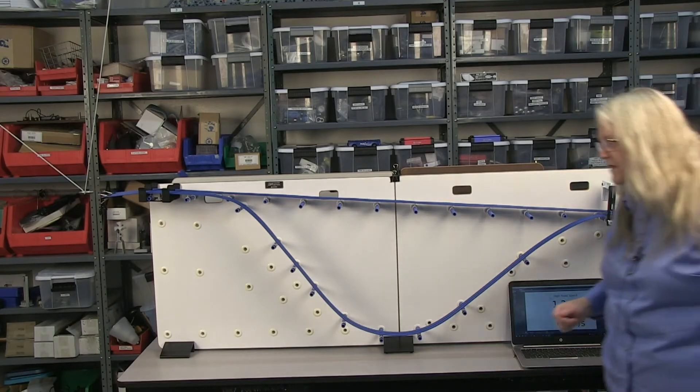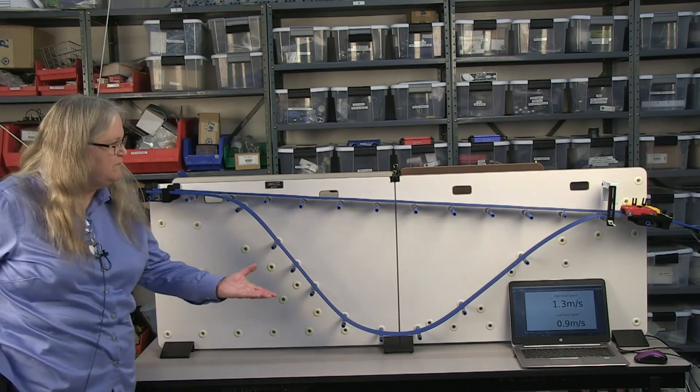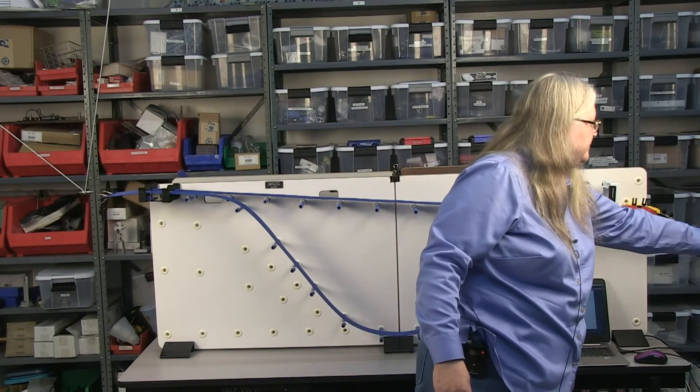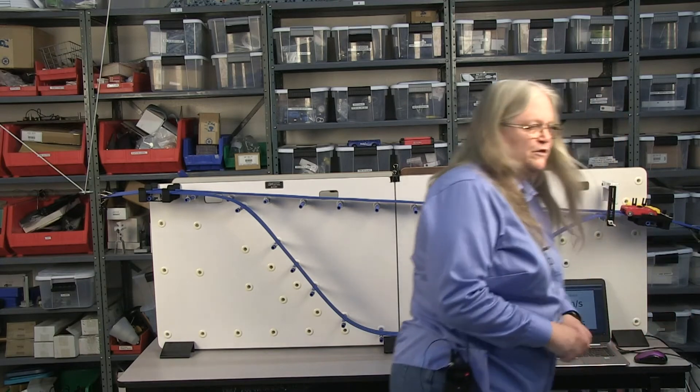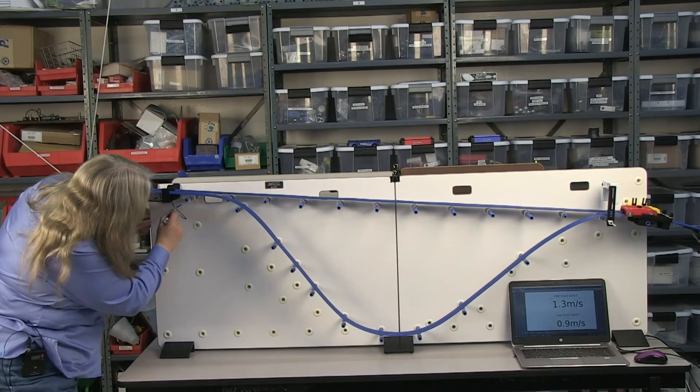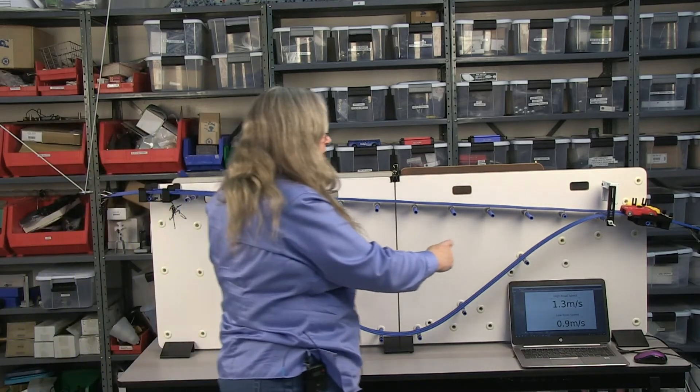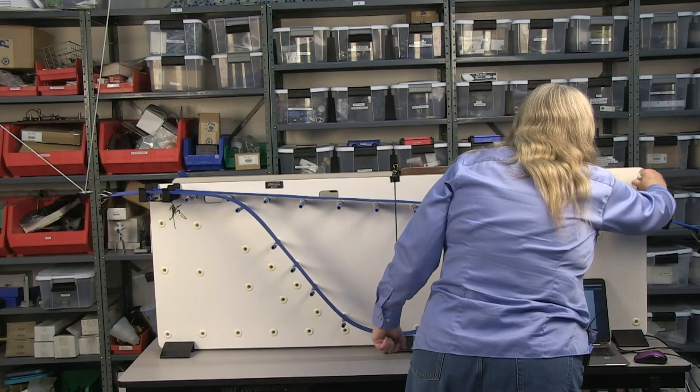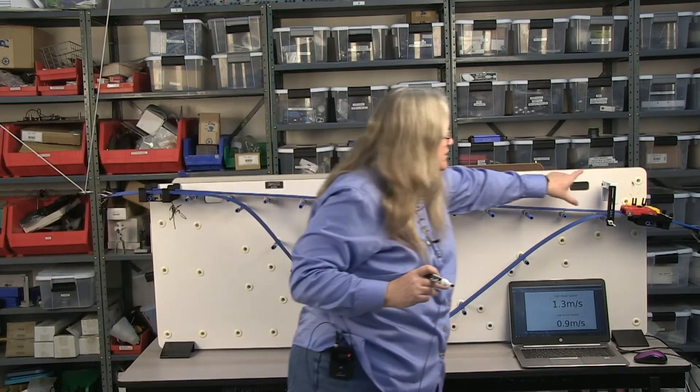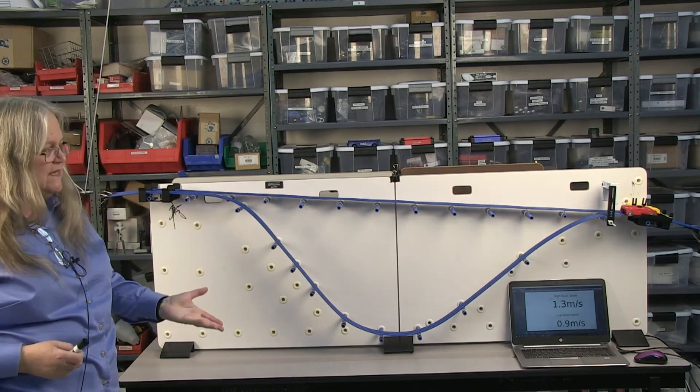Now really they should be the same because if you look at this from an energy point of view, we're starting both of them at the same point right here and then they take different paths but they end up at the same level over here. And so the difference in height should determine how much faster it's going because it loses potential energy and gains kinetic energy.